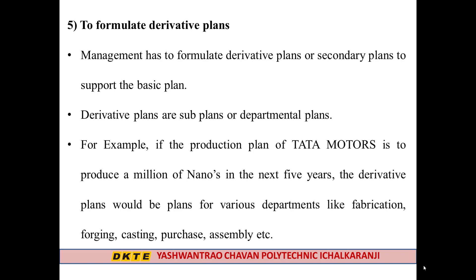The fifth step of planning is to formulate derivative plans. Management has to formulate derivative plans as secondary plans to support the basic plan. Derivative plans are sub-plans or departmental plans. For example, if Tata Motors plans to produce millions of Nanos in the next five years, the derivative plans would cover various departments like fabrication, forging, casting, purchase, and assembly.